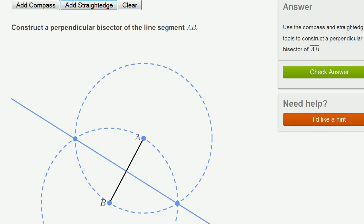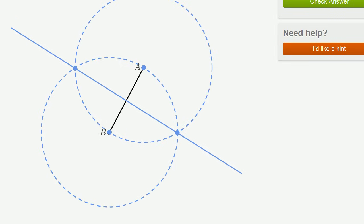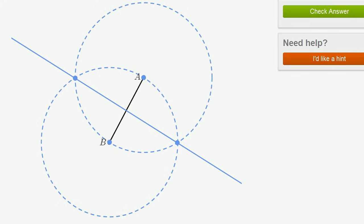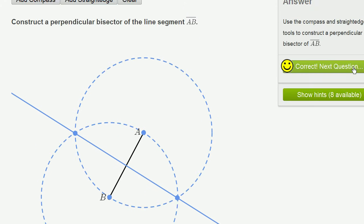And let me scroll down so you can look at it a little bit clearer. So there you go. That's my construction. I've made a perpendicular bisector for segment AB. Check my answer. We got it right.